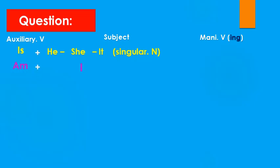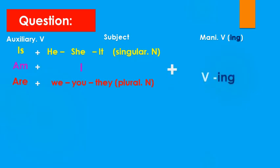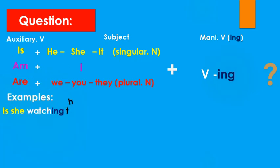If the auxiliary is 'am', the subject is 'I'. If the auxiliary is 'are', the subject is we, you, or any plural noun. We put the question mark at the end. Here we have examples: 'Is she watching the match now?'